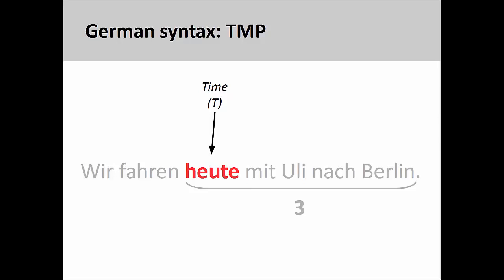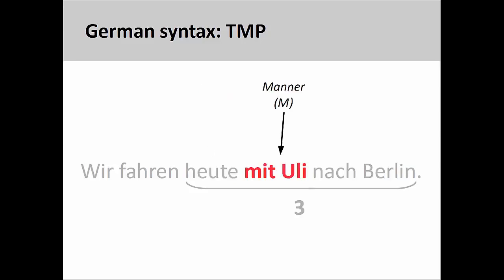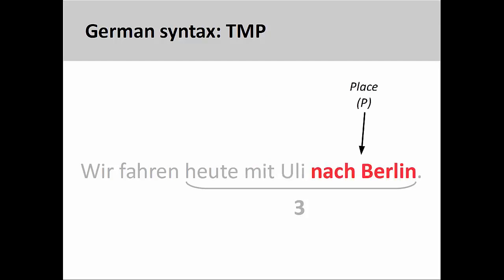The first element expressing time — here 'heute' — will always come first. The element expressing manner will come second. Here, to illustrate this point, I have added the dative prepositional phrase 'mit Uli' — 'with Uli' — to the sentence we have been examining. The third element, here the dative prepositional phrase 'nach Berlin,' will express place.